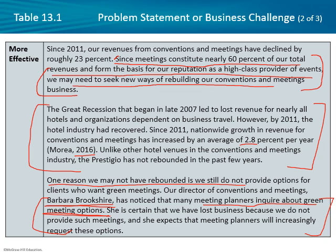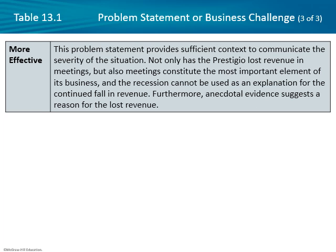You can really see the difference — there's a lot more context and more reasons explaining why this is important. It provides sufficient context to communicate the severity of the situation. The key questions to ask are: not just what is the problem, but why should we care, why is this important, what are some explanations, and is there anything we can do about it? If there's nothing you can do about a problem, why bother researching it?